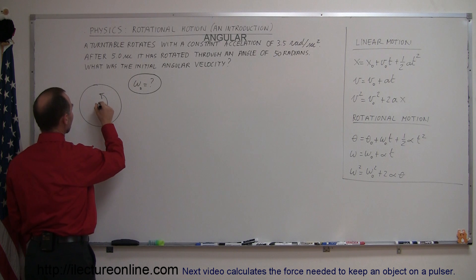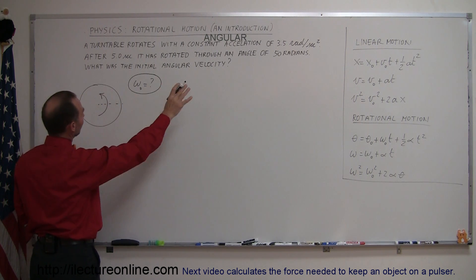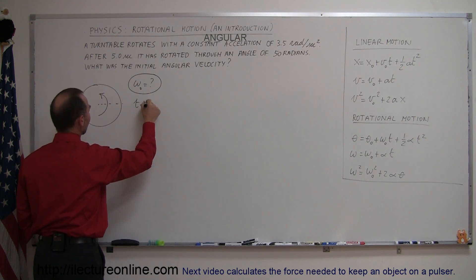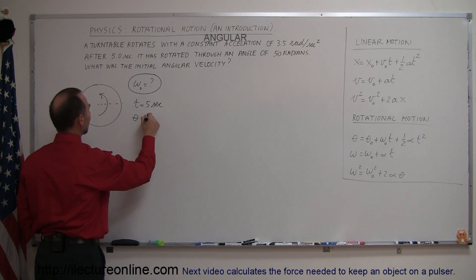It does travel through an angle by going around for a certain amount of time - it says five seconds, so time equals five seconds. It goes through an angular distance of 50 radians.